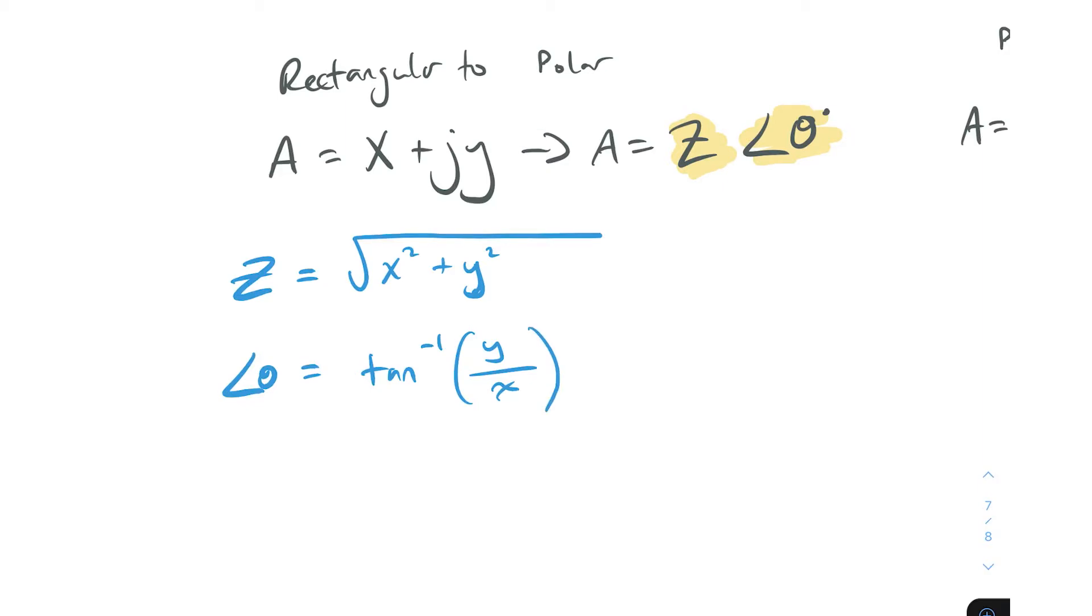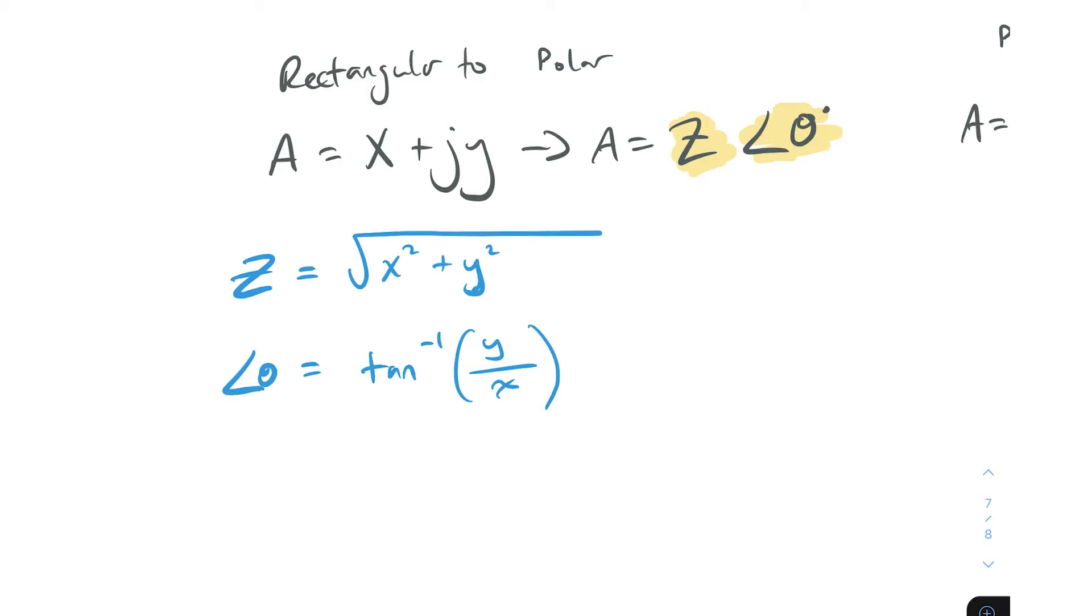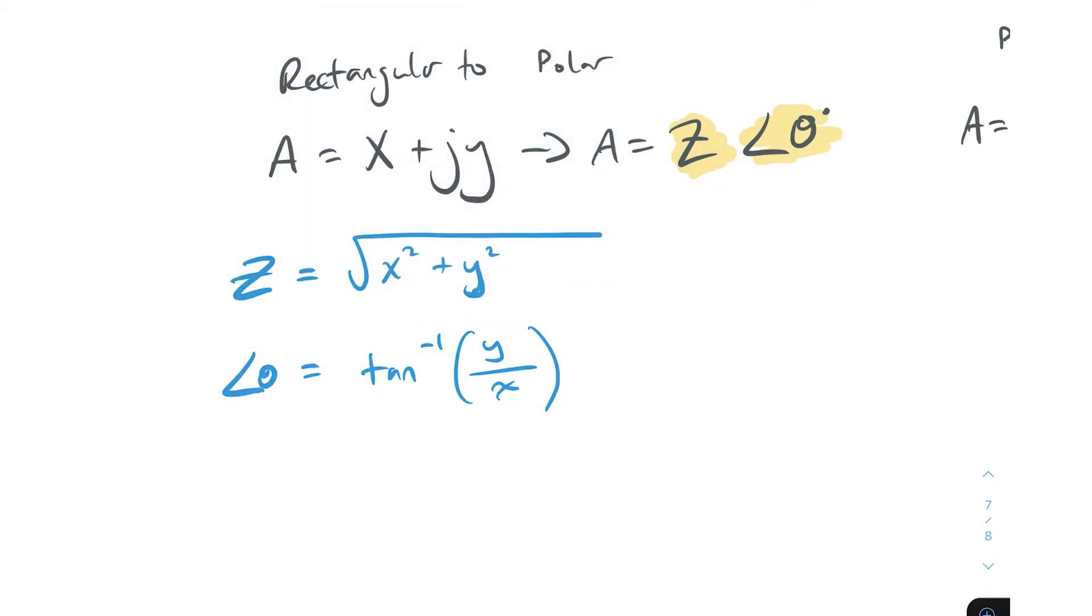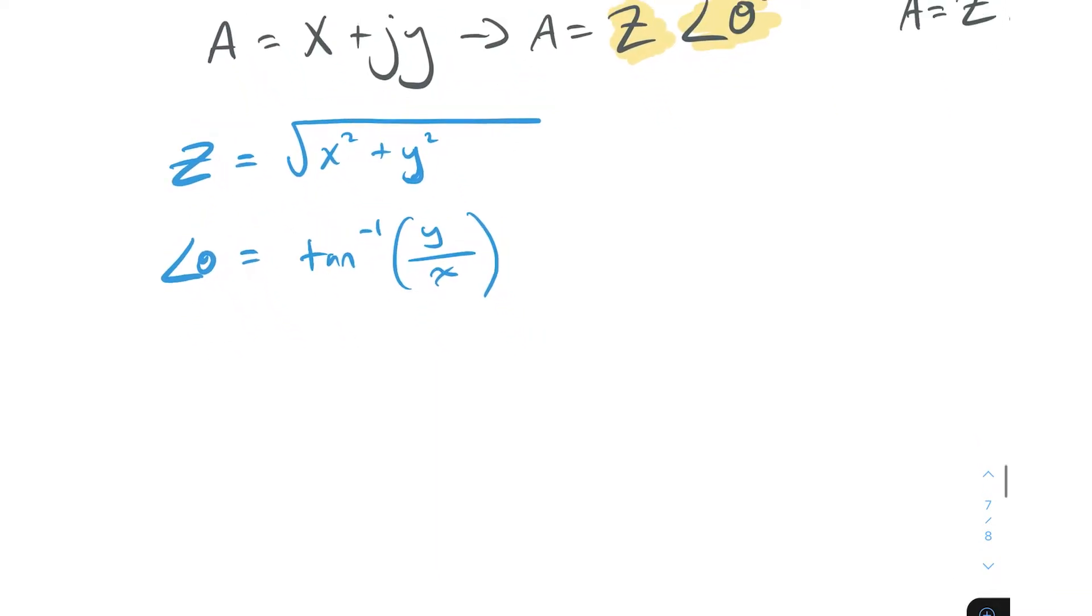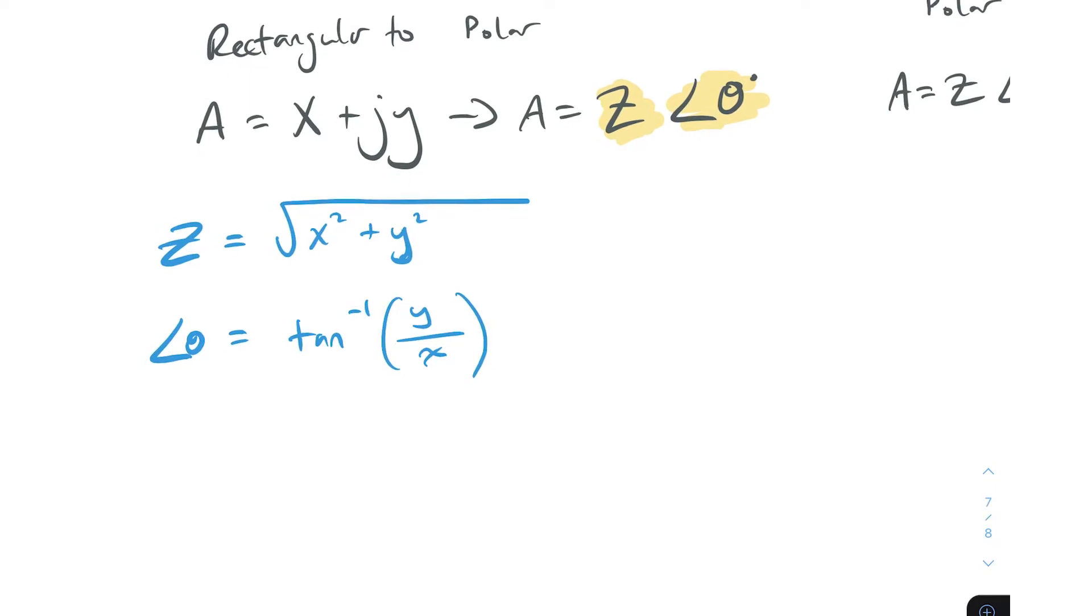To work out the angle theta, you take the inverse tan, the tan to the minus one, and then of y over x. That's it, that gives us our angle for our polar format. Let's do an example of that. When we do examples and attribute units to things, it starts to make a lot more sense. If we had in our circuit a total voltage of 8 minus j4 millivolts, that's our total voltage in rectangular format.